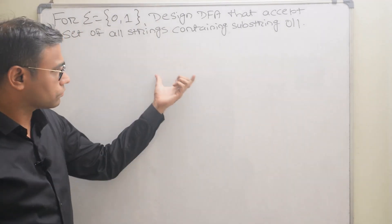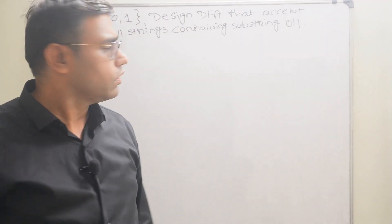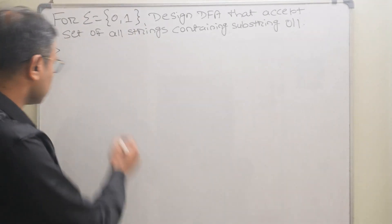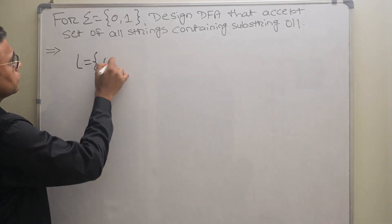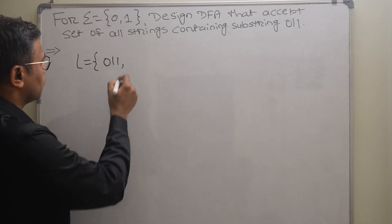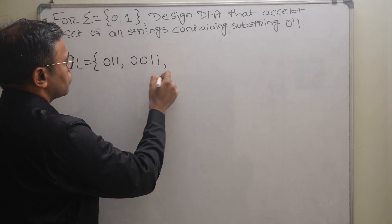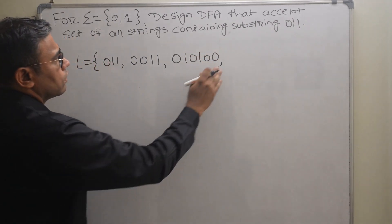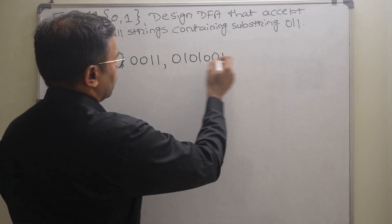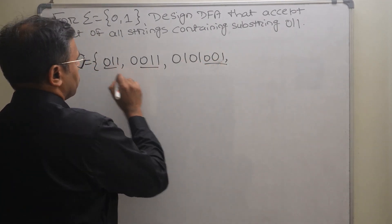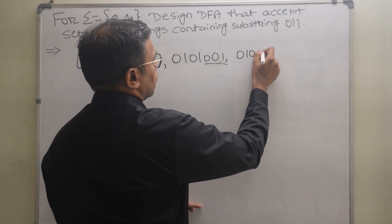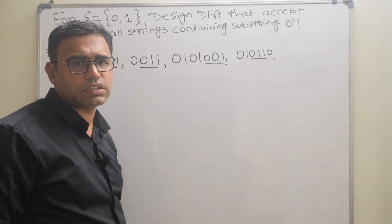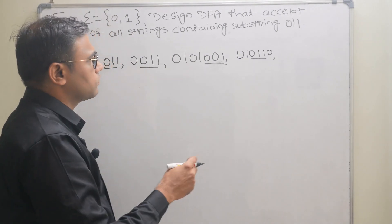First we will write down all possible values containing the substring 011. The language L includes strings like: 011, 0011, 01010... and so on. The string can start with 0 or 1 and end with 0 or 1, but it must contain the substring 011.